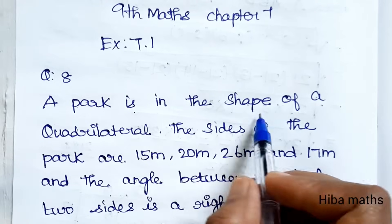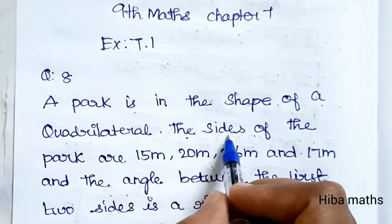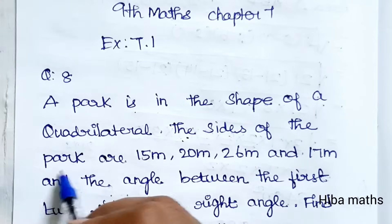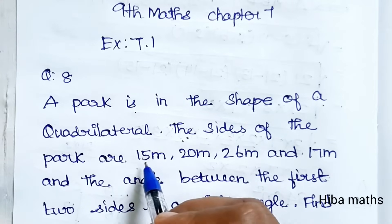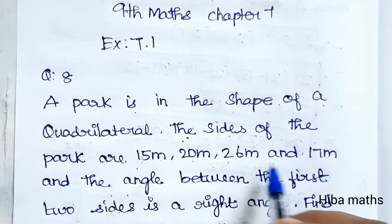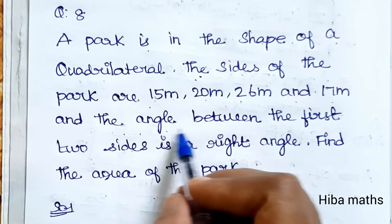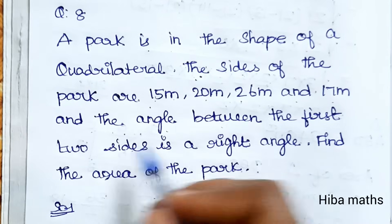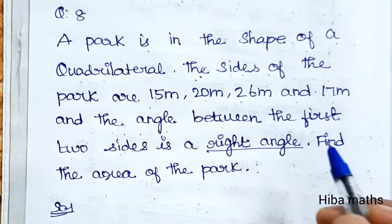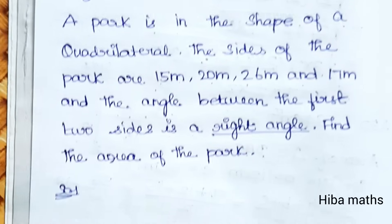A park is in the shape of a quadrilateral. The sides of the park are 15 meter, 20 meter, 26 meter, and 17 meter. And the angle between the first two sides is a right angle. Find the area of the park.